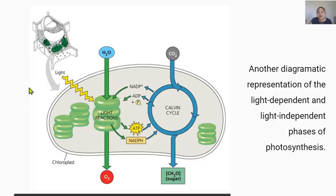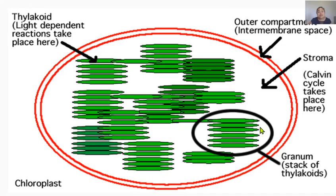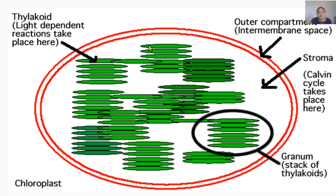Here is another diagrammatic representation showing the light-dependent phase in the thylakoid membranes and the light-independent phase in the stroma. And here's another diagram you could draw yourself: the chloroplast with its double membranes — outer and inner — the thylakoid membranes in stacks called grana, which are green because they contain chlorophyll. This is where the light-dependent phase occurs. The stroma, which is colorless, is where the light-independent phase of photosynthesis occurs.